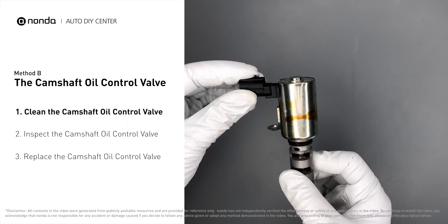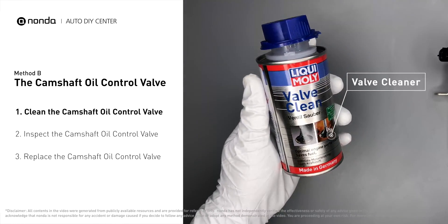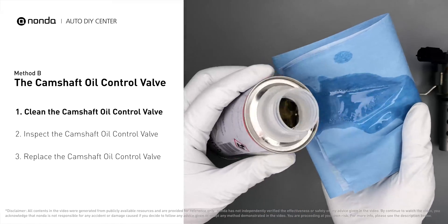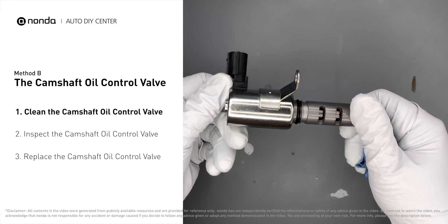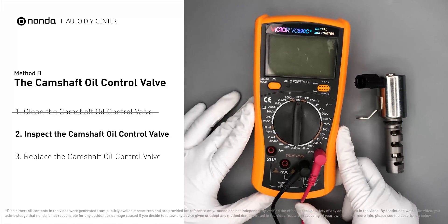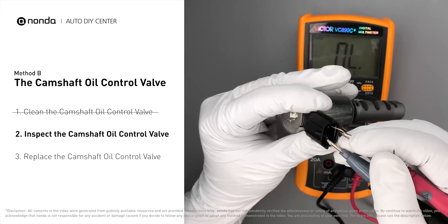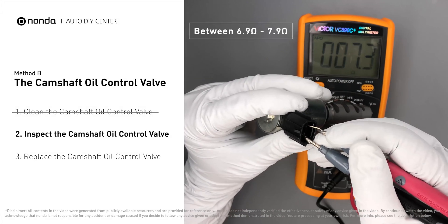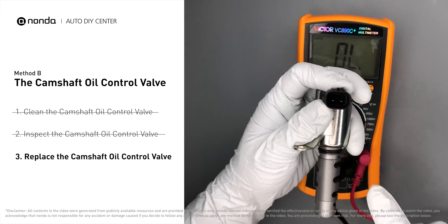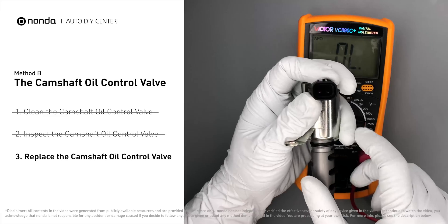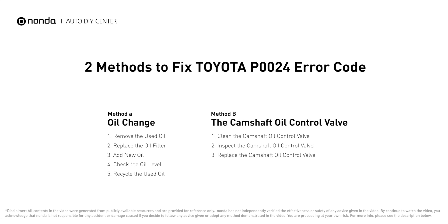Method B: the camshaft oil control valve. First, carefully remove the camshaft oil control valve from the engine. Use a valve cleaner to clean the camshaft oil control valve, then use a multimeter to test it. At an ambient temperature of 68 degrees Fahrenheit, the valve resistance should be between 6.9 ohms and 7.9 ohms. If you do not get a reading within this range, the camshaft oil control valve is faulty and needs to be replaced.